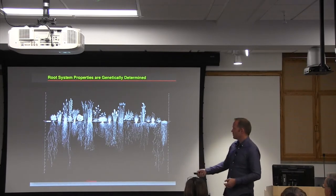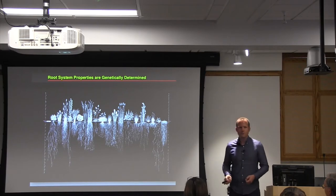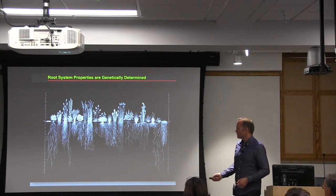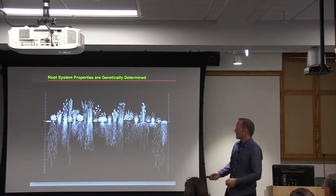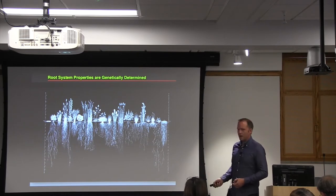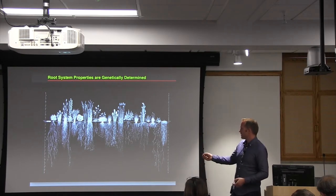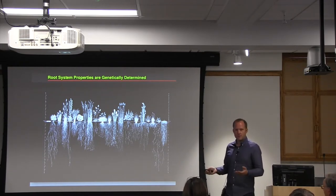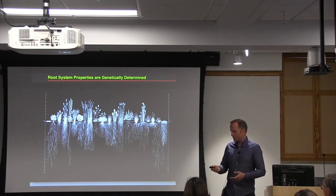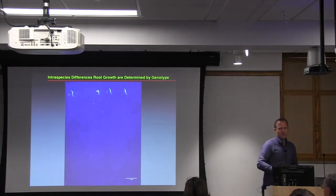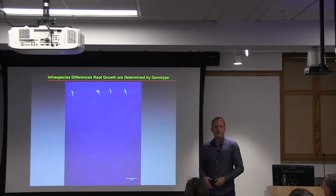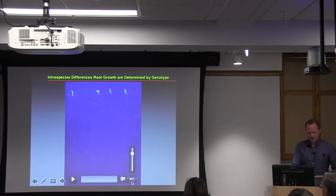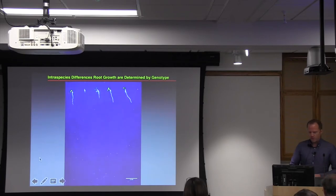Interestingly, root architecture is very dramatic — or even more dramatic — if you compare it to shoot architecture that we see every day. This is a beautiful drawing from Weaver on prairie plants. You can see that it's easy to distinguish species according to their root system architecture. You have species that basically grow very deep and species that form very shallow root systems that explore the upper soil areas much better. The big question is what actually determines these differences — and not only between different species, but also within one species. The work I will tell you about today is done in the tiny model species Arabidopsis thaliana. We use this because there are so many tools available, but we can study the processes that matter in the larger picture of evolution also within this single species.